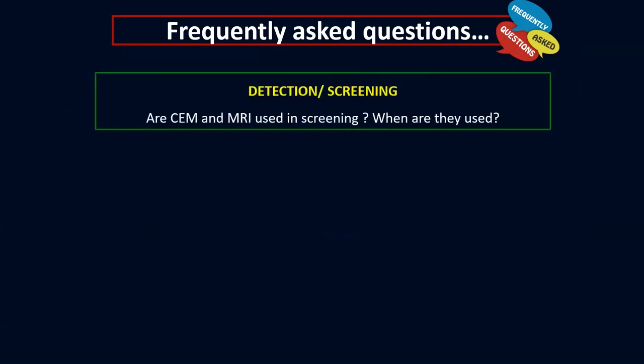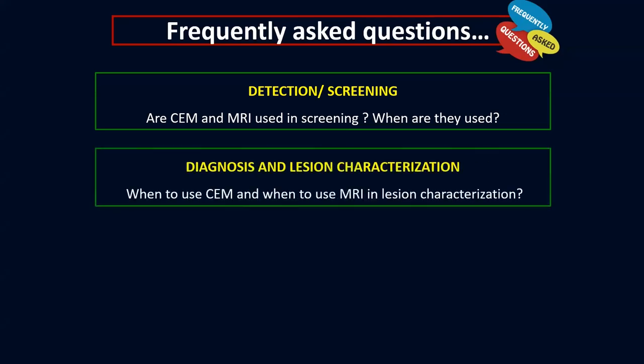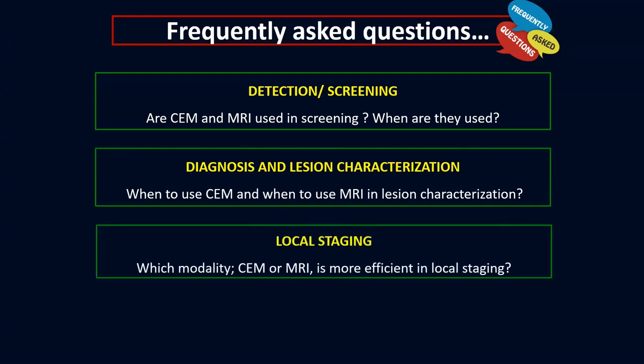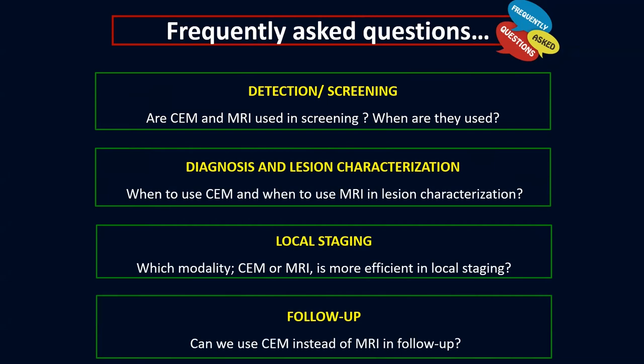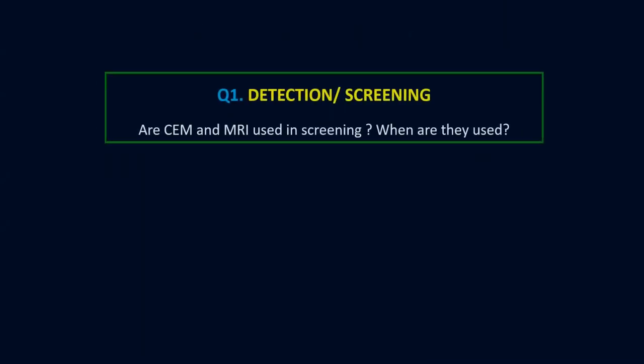The first question is about detection or screening: are contrast mammography and MRI used in screening and when? In the diagnostic context, when to use contrast mammography and when to use MRI in lesion characterization? In local staging, which modality is more efficient? And lastly, in the follow-up of treated breast cancer patients, can we use contrast mammography instead of MRI?